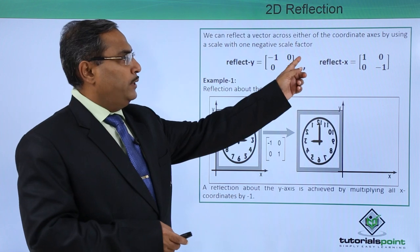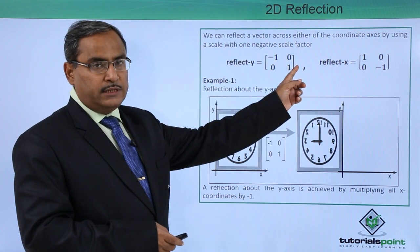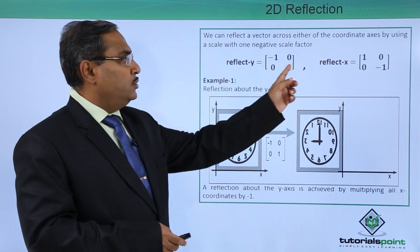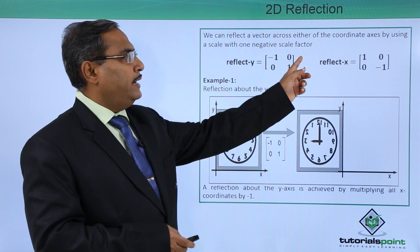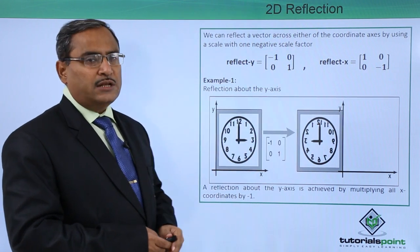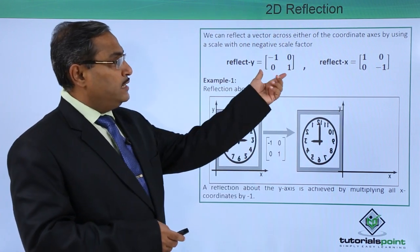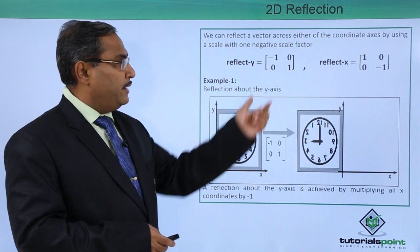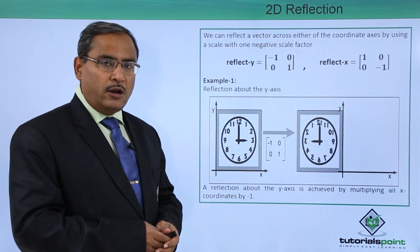If we just multiply with another matrix here, one column matrix containing x and y, it is minus x and it will remain as plus y. This is the respective transformation matrix for reflection along the y-axis.